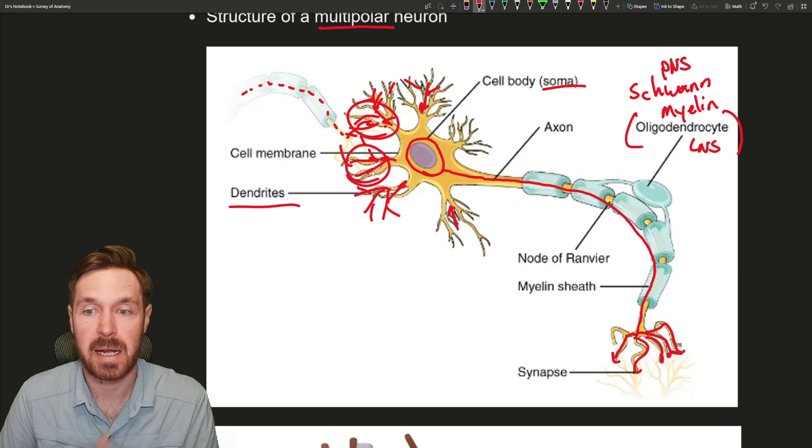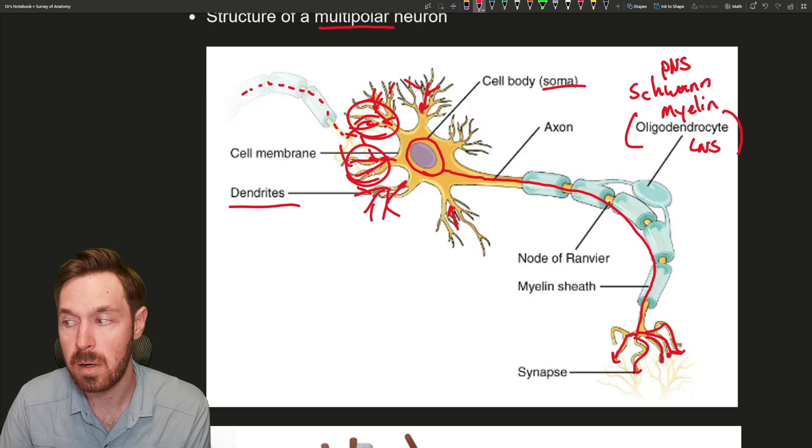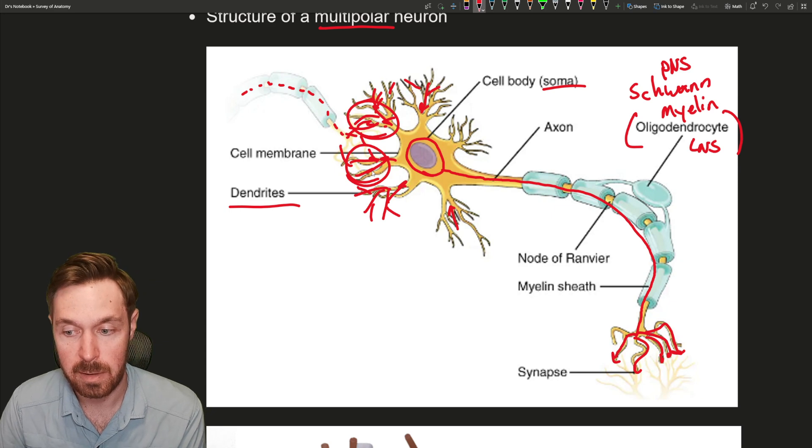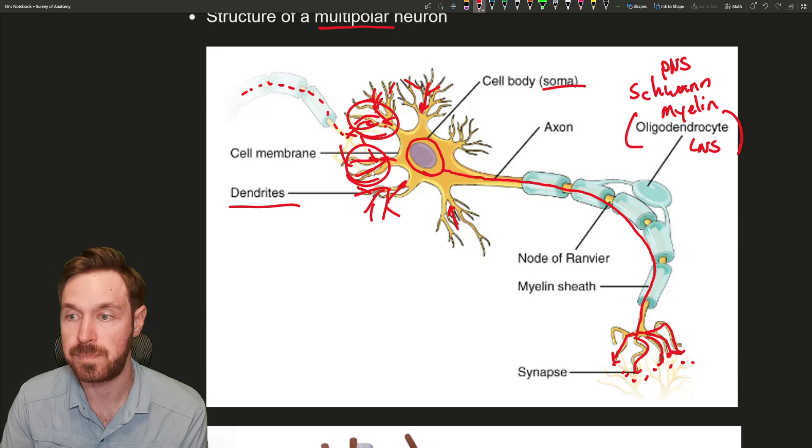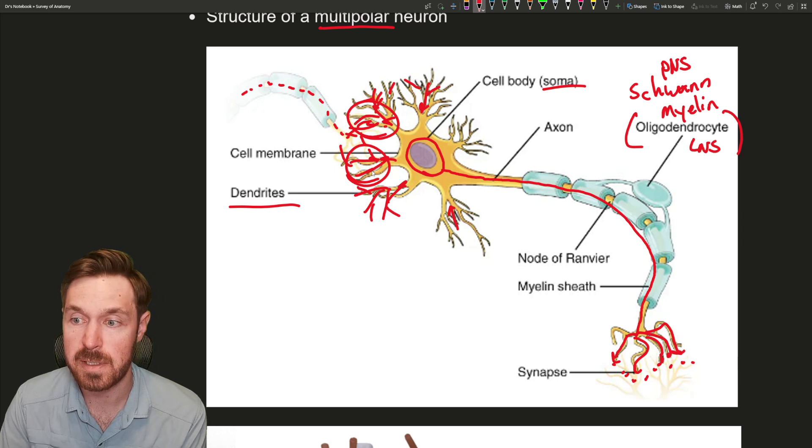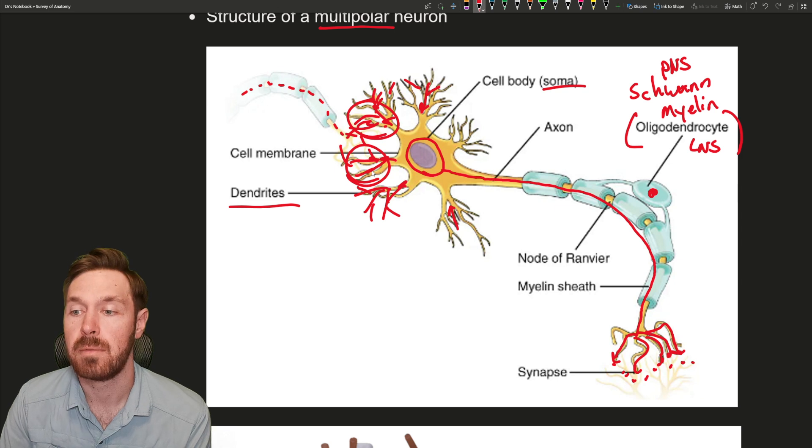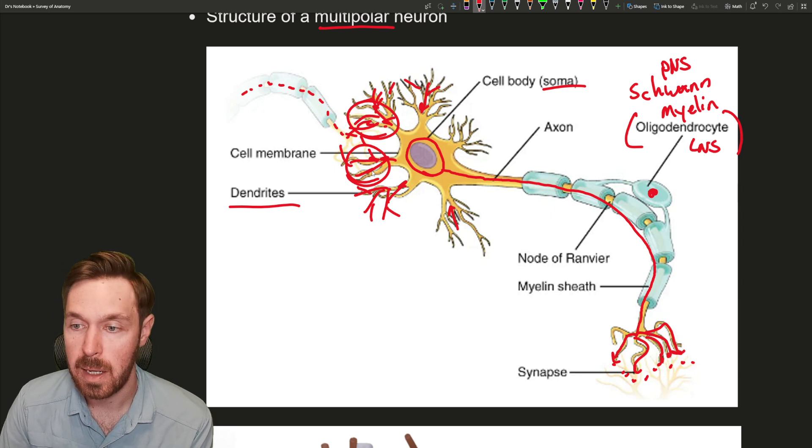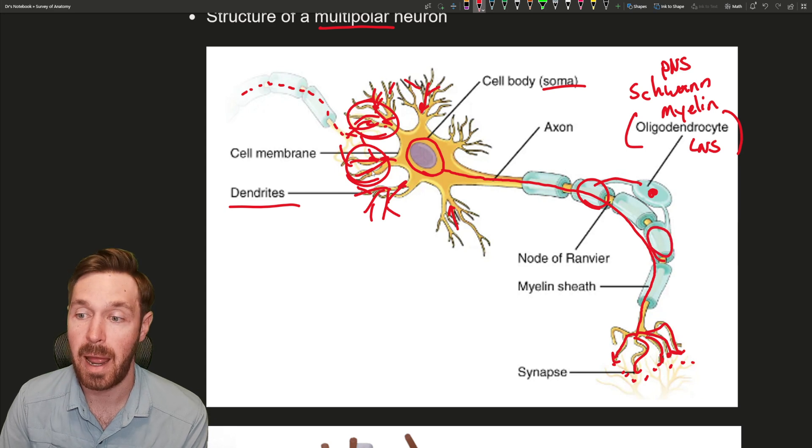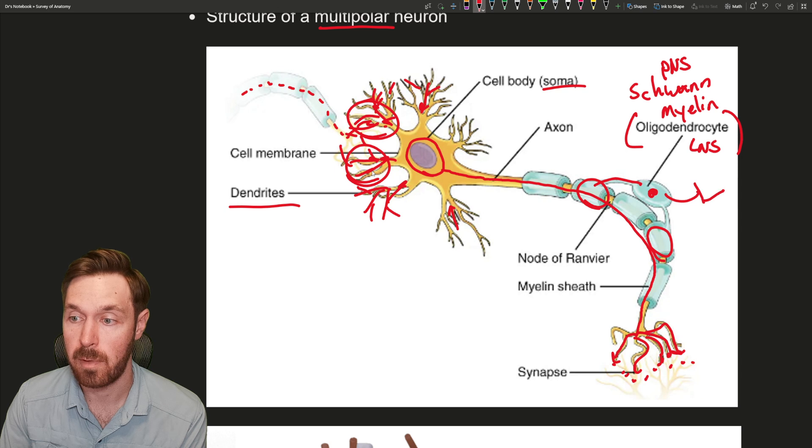What these do is they produce a substance called myelin. Myelin, think of it as like the rubber insulation on an electrical cable. It protects the axon. In the central nervous system, these oligodendrocytes, the nucleus would be located over here, and then they come out and they can wrap up to like 20 to 50 axons. You can have some over here wrapping around axons, some over here and so forth. They can wrap around multiple axons on different neurons.